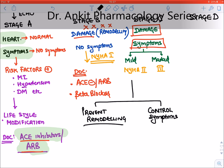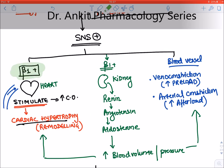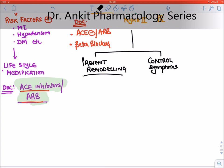Drugs which can prevent cardiac remodeling are those that inhibit the pathological mechanisms. Beta-blockers inhibit beta-1 receptor stimulation and cardiac hypertrophy. Inhibiting the RAAS system also prevents cardiac remodeling. Vasodilators decrease preload and afterload. The mnemonic for drugs inhibiting cardiac remodeling is SAHIB — the first drug being Sacubitril, a newly approved drug.